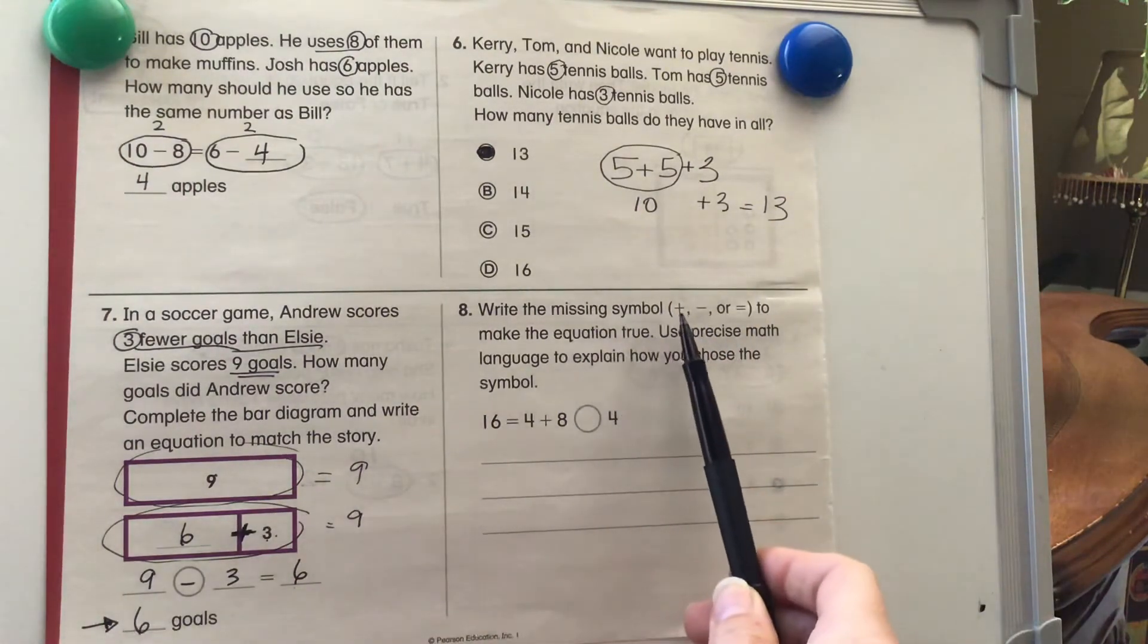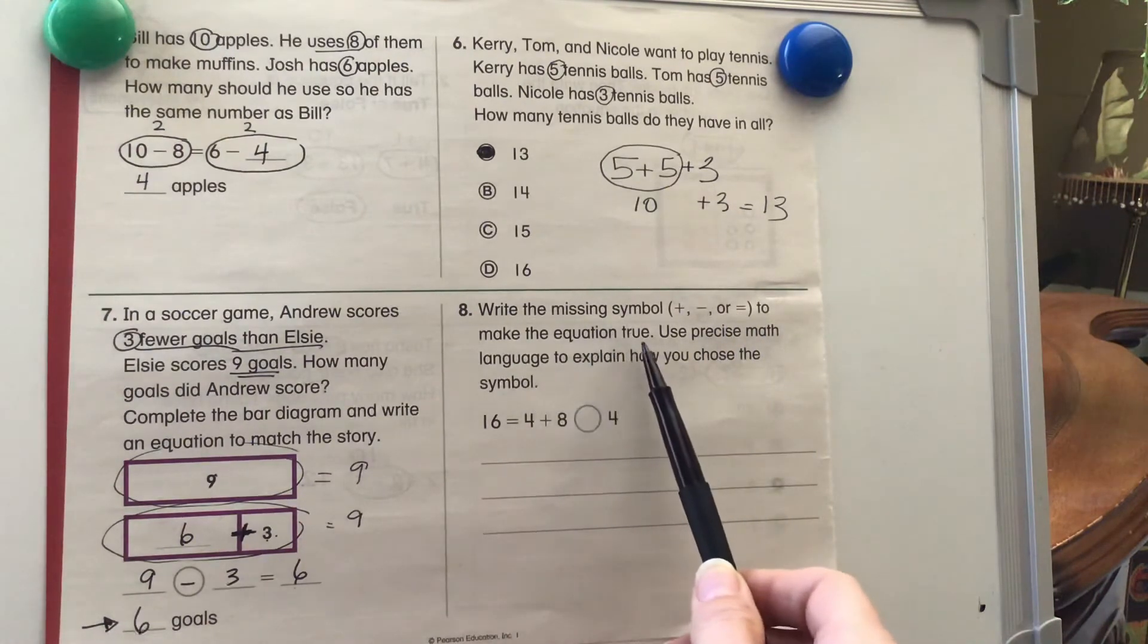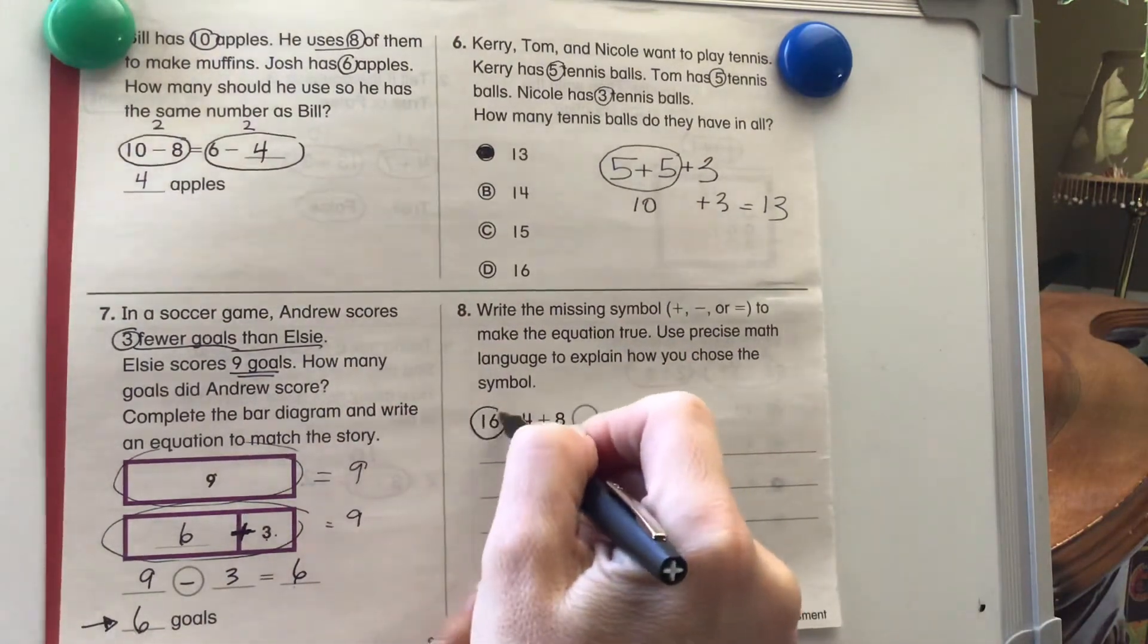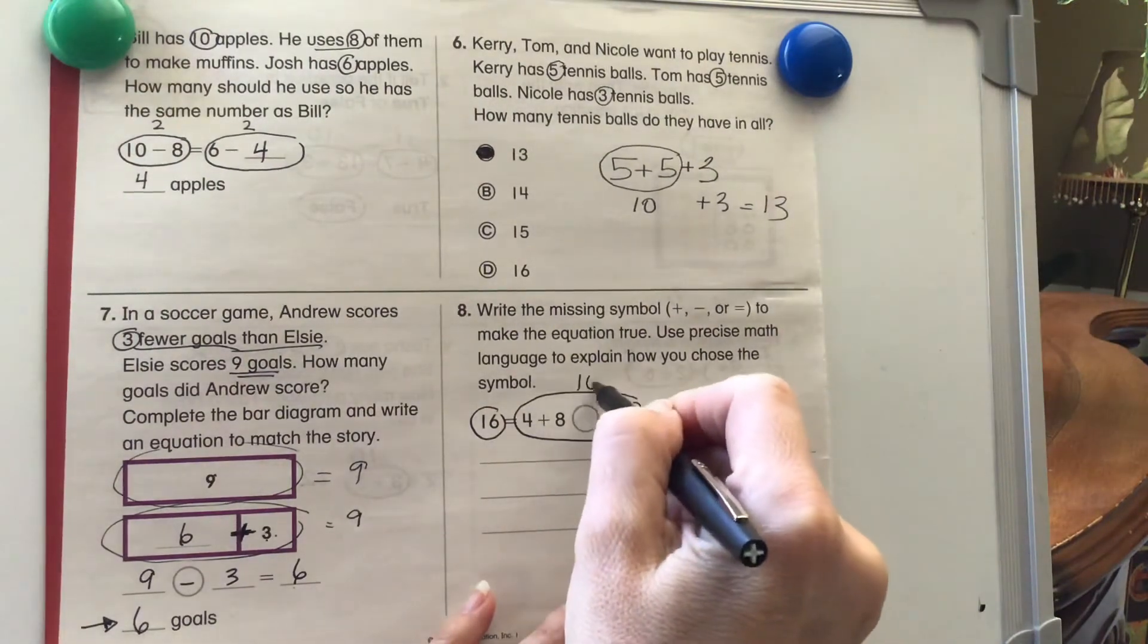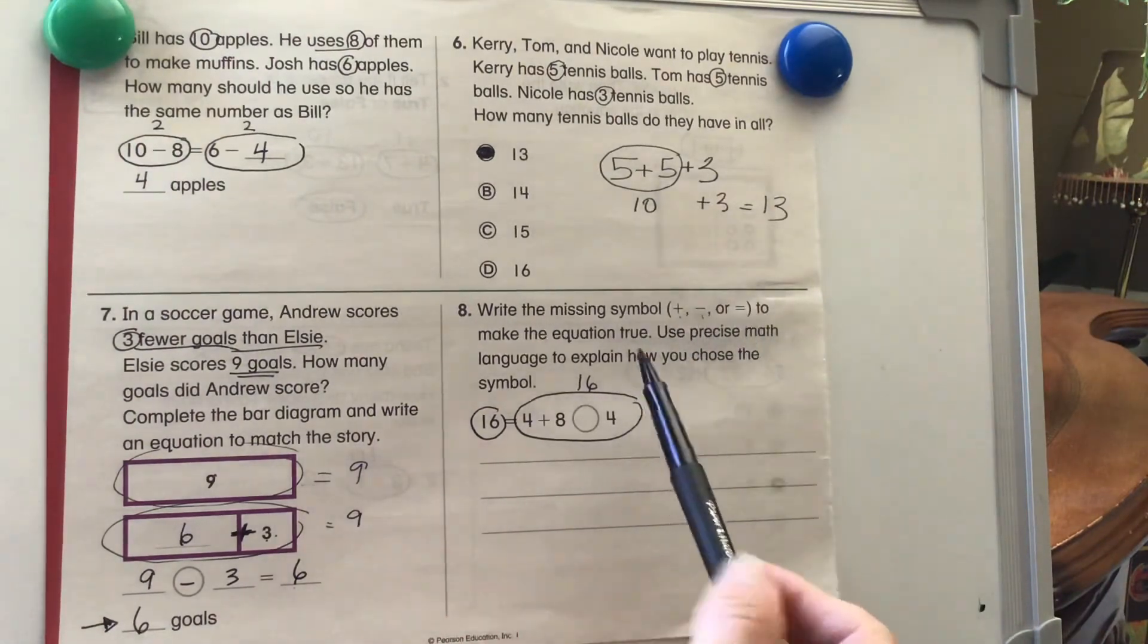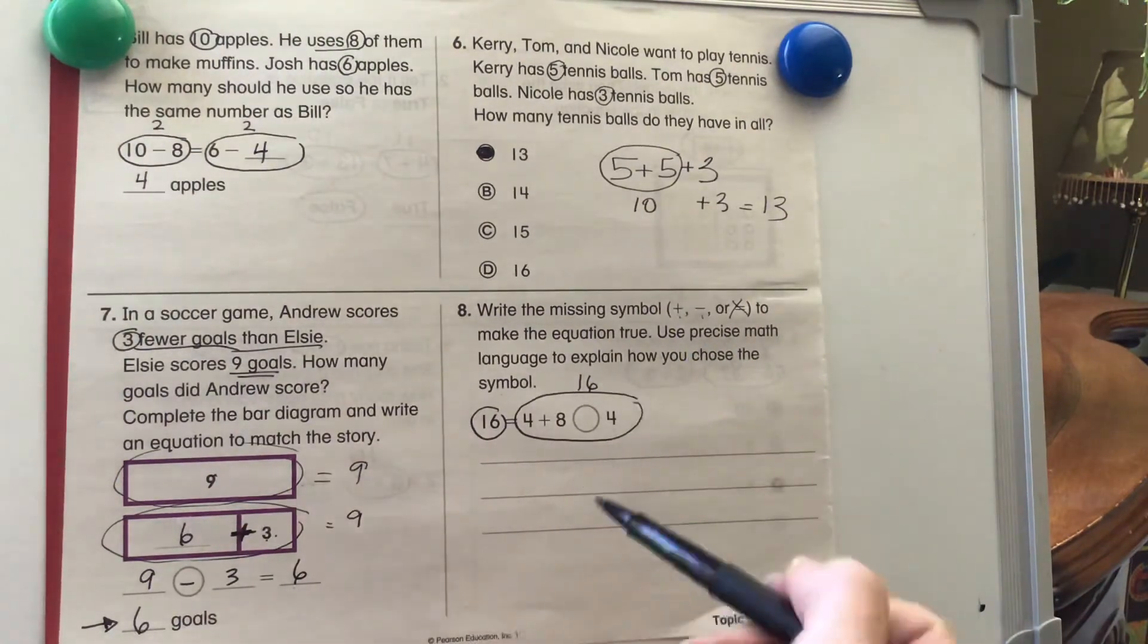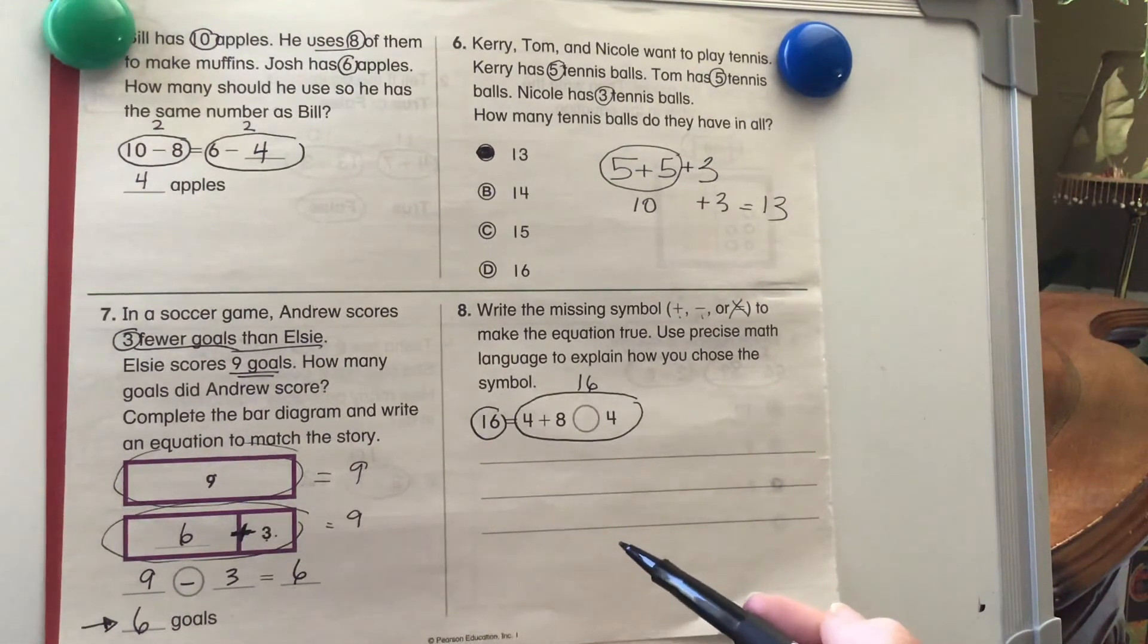Number 8. Write the missing symbol, addition, subtraction, or equal sign to make the equation true. Use precise math language to explain how you chose the symbol. So on one side, we have 16. Over here, we have to figure out how to get this also equal to 16. We have to figure out if we need to add, subtract, or put an equal sign. First of all, we can't have two equal signs in one equation. We can only have one. So we know we're not going to use that one. Go ahead and pause the video and solve it and then explain to me how you did it.